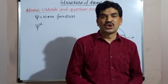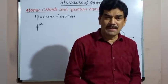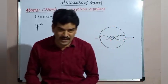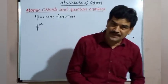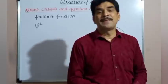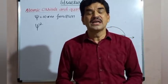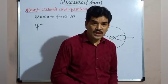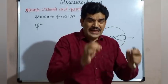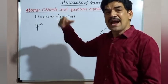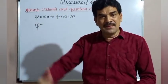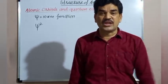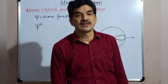For an electron, there are four quantum numbers: principal quantum number, azimuthal quantum number, magnetic quantum number, and spin quantum number. So every electron in an atom is explained by four quantum numbers, but every orbital in an atom is explained by three quantum numbers.